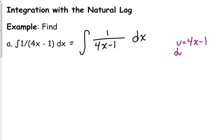So that means du over dx is 4. We don't have just plain 4 in our problem, so we've got to move that over. 1 fourth du is dx. So this is our u, and we've got something to replace our dx, and that 1 in the numerator is okay.